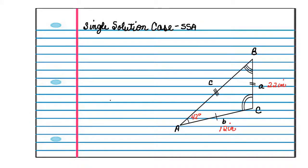I'm going to work a few that we didn't do in class here. This is a single solution case in SSA where we have a side, a side, and an angle. The best thing to do is to start with labeling different things. So we know we have an angle A that equals 42 degrees, a side B that equals 12 inches, and a side A that equals 22 inches.